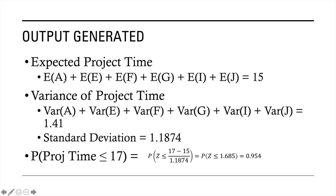The critical activities before were A, E, F, G, I, and J. Therefore, the expected project time of the project — where duration is now variable — is 15 weeks. Remember that this 15 is not an exact project time; it is an expected project time. Because it is expected, we can also expect some variance. The variance of your project time is the sum of the variances of the individual critical activities, which gives a total variance of 1.41.